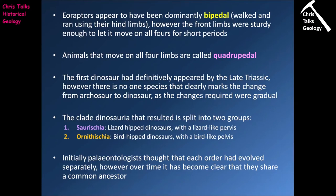The Eoraptors were a dominantly bipedal group, meaning they walked and ran using their hind limbs only, although their front limbs were sturdy enough to allow them to move on all fours for short periods — referred to as being quadrupedal. The first dinosaurs had definitely appeared by the late Triassic; however, there is no one species that clearly marks the change from archaeosaurs to dinosaurs, because we're dealing with mosaic evolution — lots of small changes — making the transition more gradational than a sharp, well-defined shift.